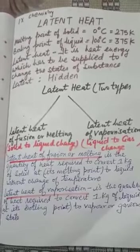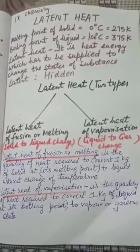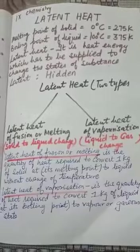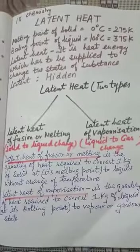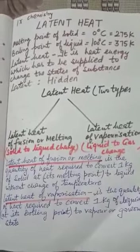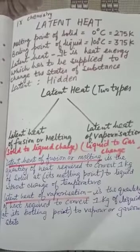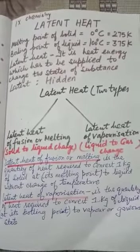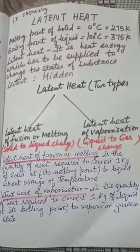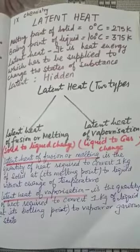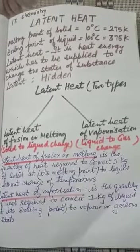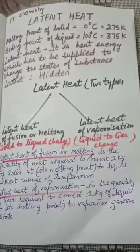Now, what is the meaning of latent? Latent means hidden. It is a heat energy — that is, hidden heat energy — in the substance, which by undergoing the change of state does not show its presence by increasing the temperature.